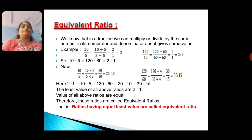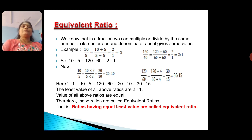Now, equivalent ratio. Students, we know that in a fraction, we can multiply or divide both numerator and denominator by the same number and it gives the same value — there is no change. For example, 10 by 5: if we divide numerator 10 and denominator 5 by 5, we get 2 ratio 1, that means 2. Similarly, 120 divided by 60: if we divide both by 60, we get the ratio 2 ratio 1.